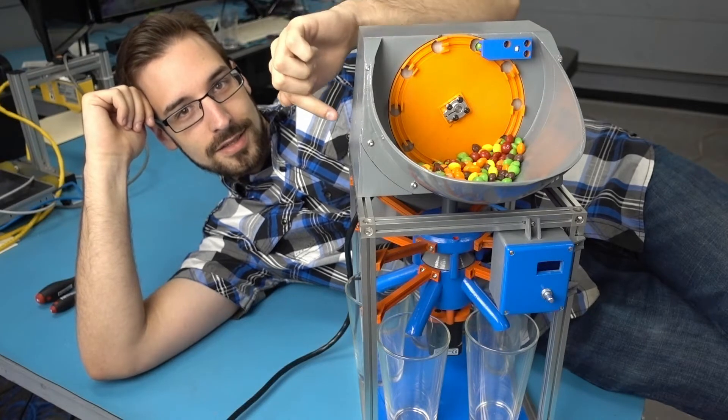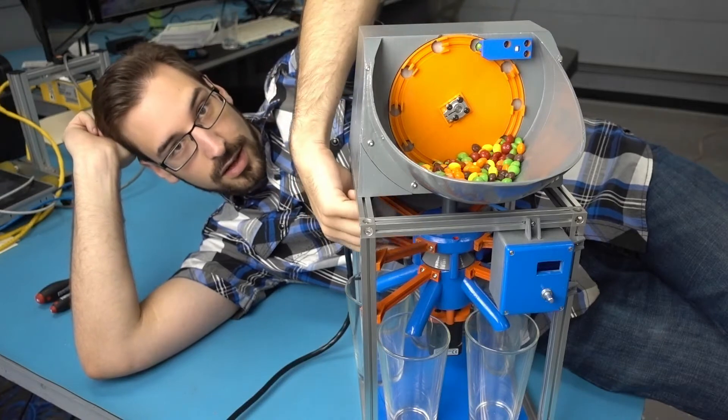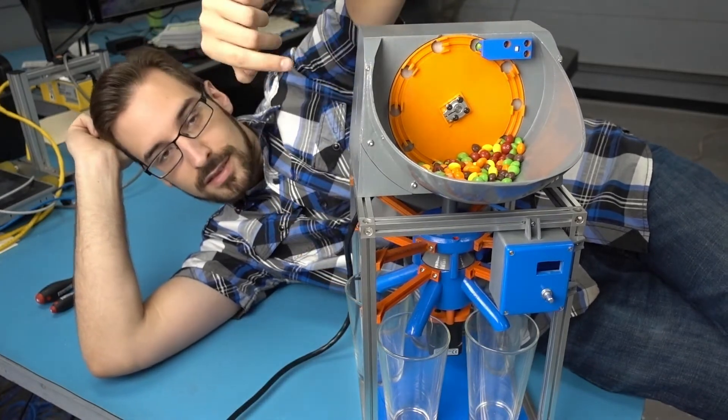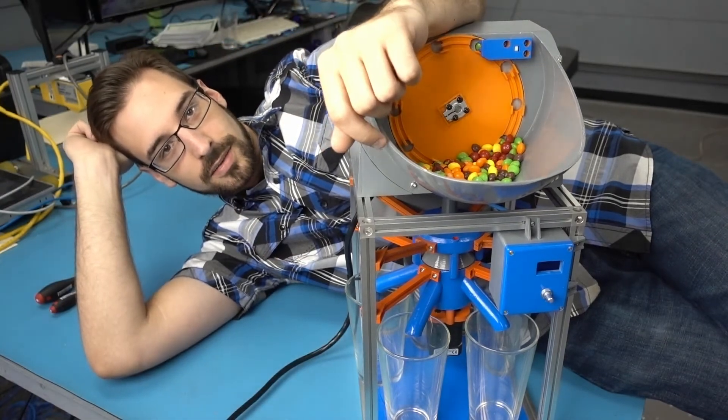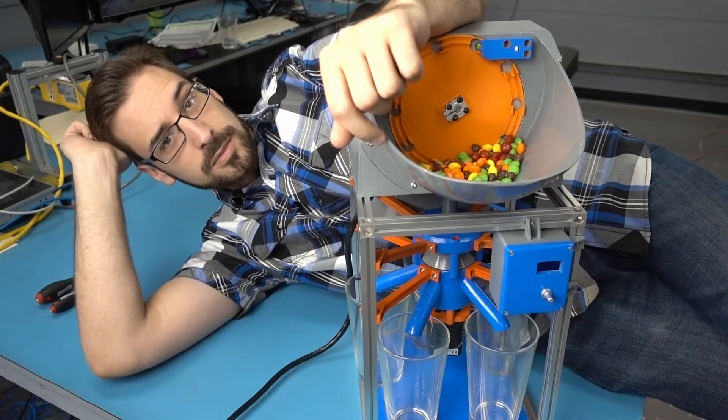Once the Skittle goes past the color sensor, the color sensor tells the diverter down here which glass to select. Once it selects the glass, the Skittle just falls right on through into that glass and it's ready for another one. It actually does this pretty quickly, so hopefully we can sort Skittles pretty quickly.